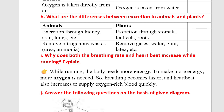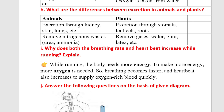Question: Why do both the breathing rate and heartbeat increase while running? While running, the body needs more energy. To make more energy, more oxygen is needed. So breathing becomes faster and heartbeat also increases to supply oxygen-rich blood more quickly.